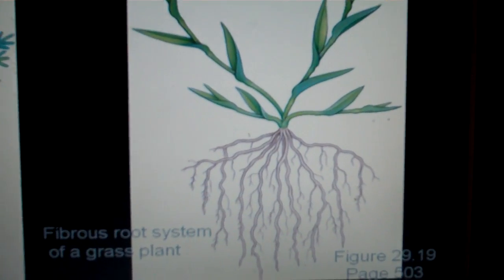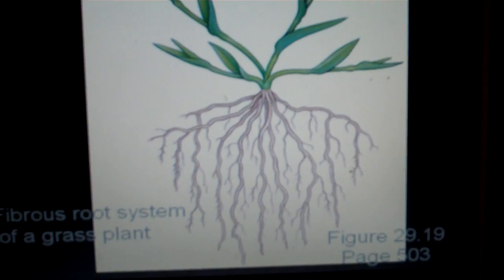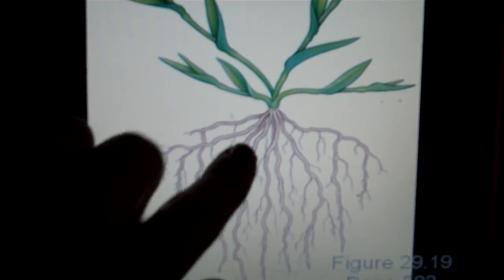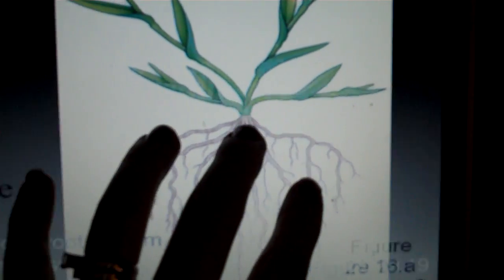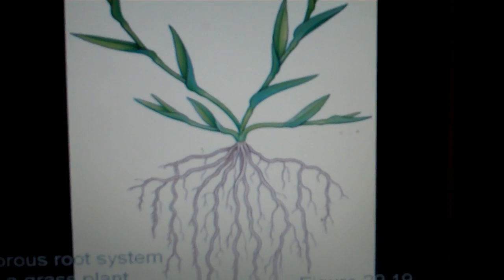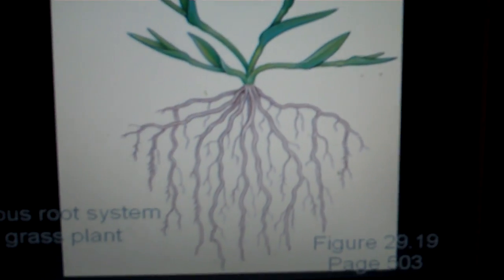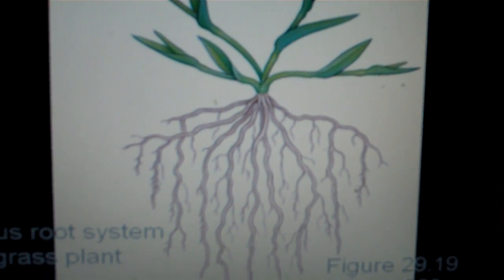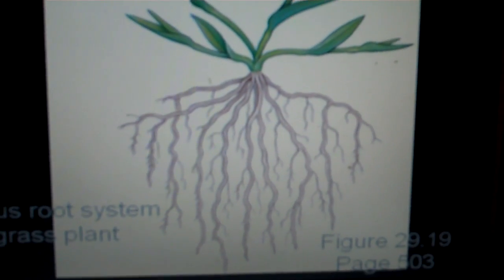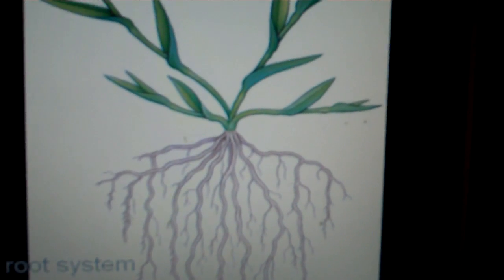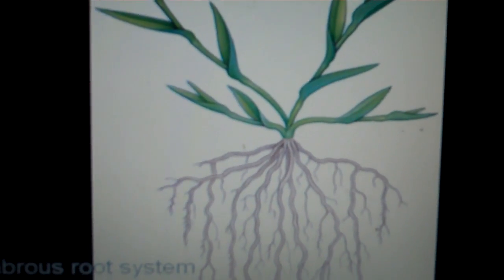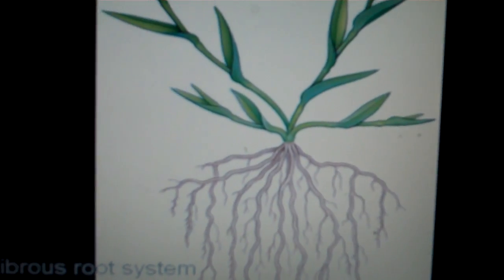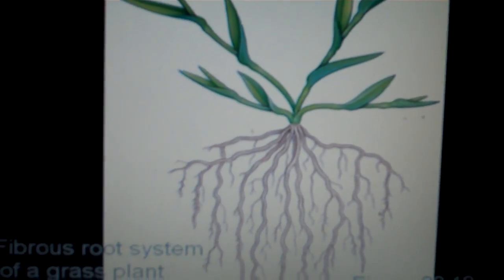The fibrous root system is common in plants such as grass. It does not have one primary root. Instead it is like a mat of roots that form pretty close to the surface of the ground, so that way they can quickly absorb water when it rains. Or you can imagine grass being watered. Water just not for very long because the roots are right next to the surface.